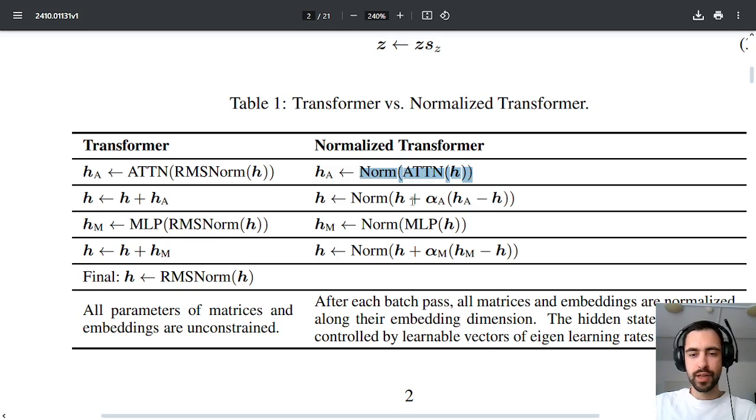And so they also add, so here in the normal transformer they add residual connection, but in nGPT they normalize that residual connection and there are some extra mathematical parameters here. They do the same for MLP, they normalize it and they remove this RMS normalization, residual connection again, and this is the output.